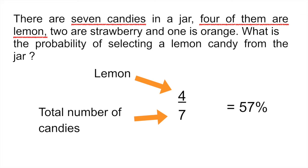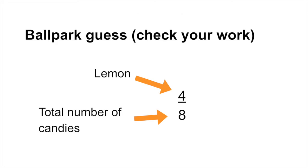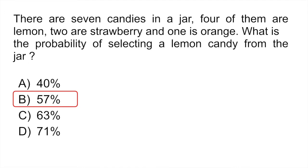And if you wanted to just double check your work or have a ballpark guess for this question, what you could do is change the total number of candies to eight instead of seven. And then here you see it's very clear, right? If you had eight candies in total, the probability of getting a lemon candy would be 50%, right? So one in two chance. So this is just a way to double check your work or take a ballpark guess before you actually do the problem. The correct answer would be B.